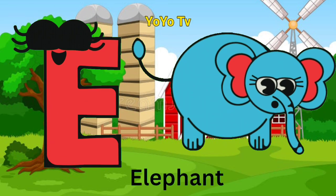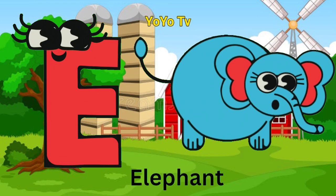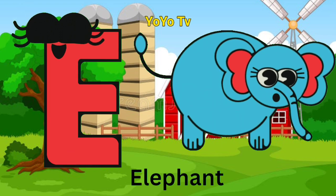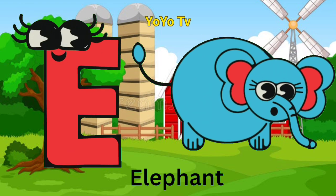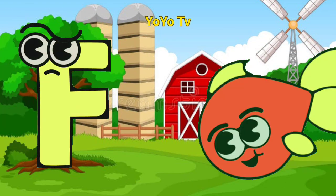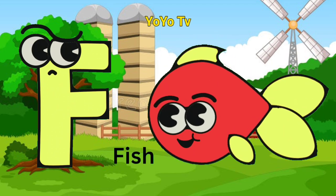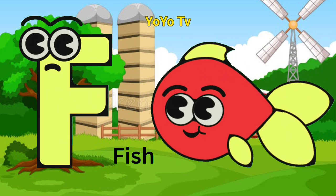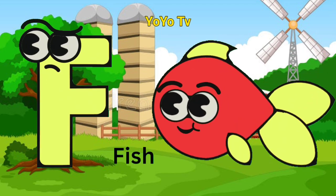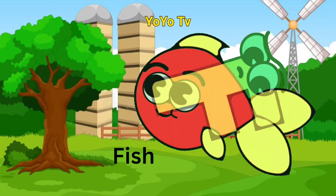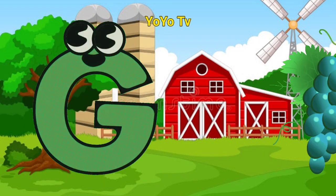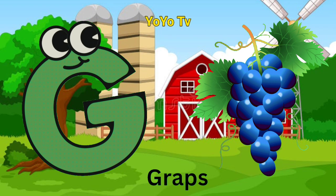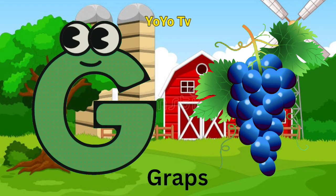E for Elephant. F for Fish. G for Grapes.